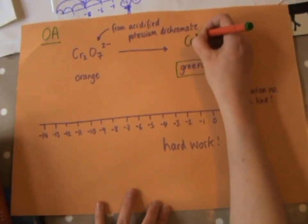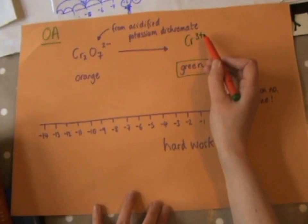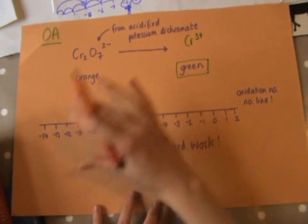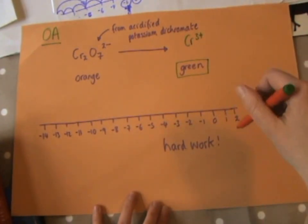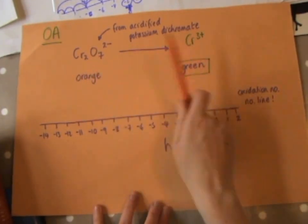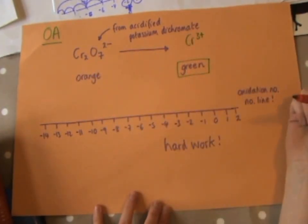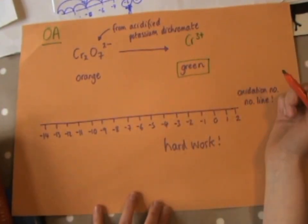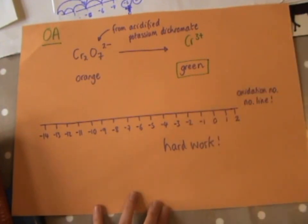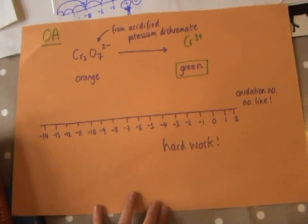The green color is the color of the chromium(III) ion. I'm going to bring in some oxidation numbers to prove that a reduction is happening to our oxidizing agent. If you're confident with oxidation numbers you might fast forward this bit. If oxidation numbers send a shiver down your spine, you might want to pause and look at the rules for working them out in your AS textbook, then come back.